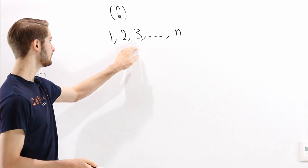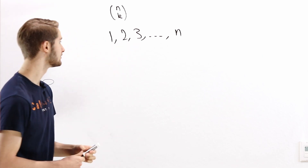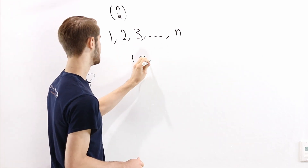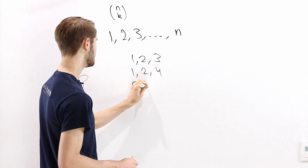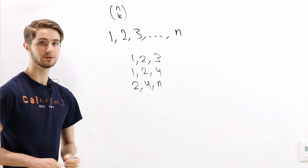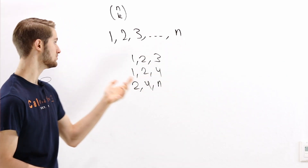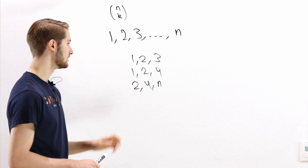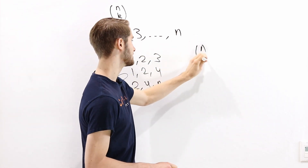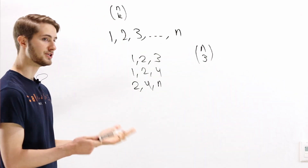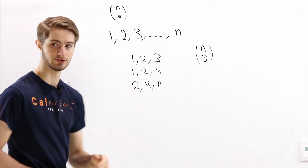Let's say we have the numbers 1, 2, 3, and so on up to n, and we want to choose three numbers out of these. We could choose 1, 2, and 3; or 1, 2, and 4; or 2, 4, and n, or any other three numbers. Order doesn't matter, so choosing 3, 2, 1 is the same as choosing 1, 2, 3. The number of ways to choose 3 numbers out of n is called n choose 3. More generally, the number of ways to choose k numbers out of n is denoted n choose k.